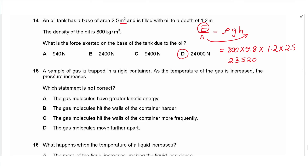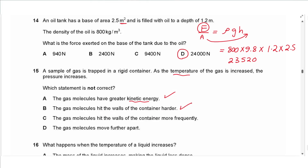Question 15: a gas is trapped in a rigid container and its pressure increases as temperature rises. The gas molecules have greater kinetic energy — correct. They hit the walls harder — correct. They hit the walls more frequently — correct. But the statement that gas molecules move further apart is wrong because a rigid container has constant volume, so the spacing between molecules remains constant. The answer is D.